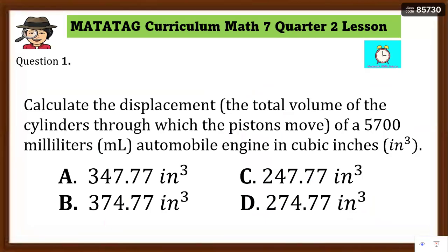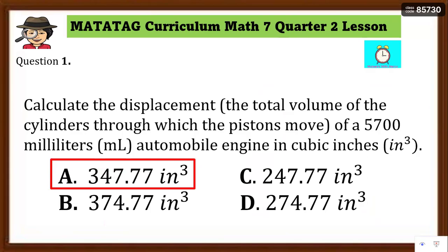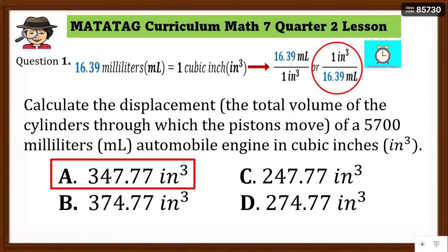Now answer question number 1 for your assessment. The answer is letter A: 347.77 cubic inches. The problem asked to calculate the engine displacement — total volume of cylinders through which pistons move — of a 5,700 ml automobile engine in cubic inches. Converting ml to cubic inches, we use the unit fraction 1 cubic inch over 16.39, so 5,700 divided by 16.39 gives us letter A.